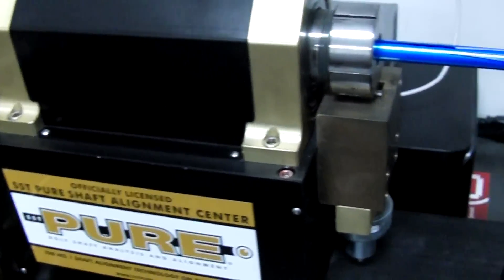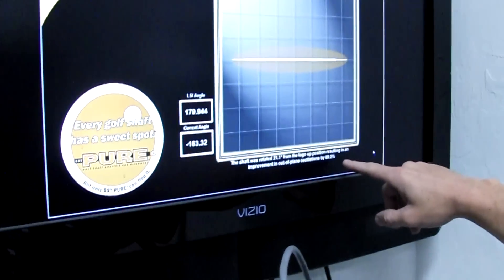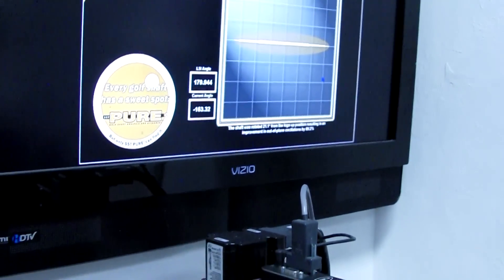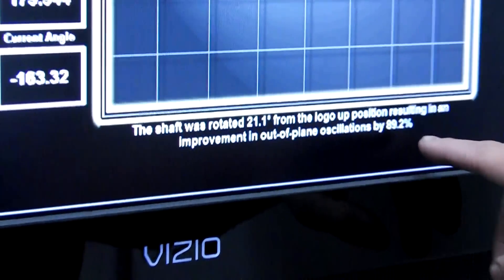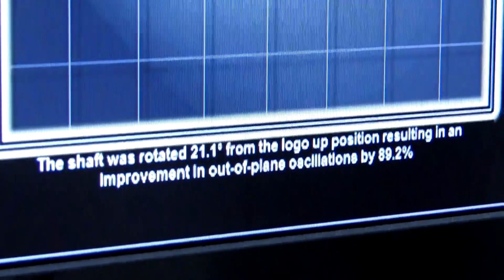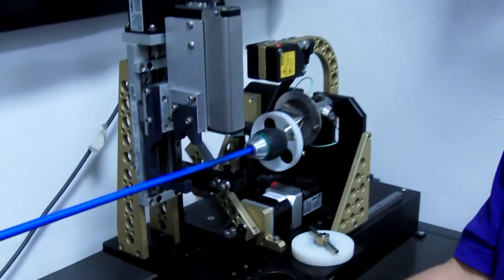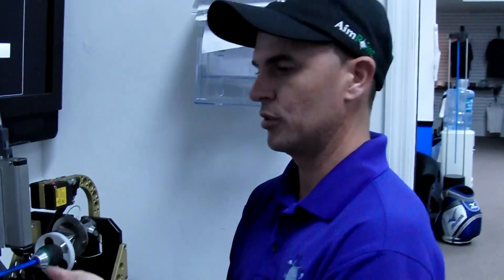As you can see here on the screen, it was an 89% improvement over the logo up. I'll just click no. So you can see here it's 89.2% and we rotated it 21 degrees from logo up. So basically, from spining it to peering it, there was basically an 89% improvement.